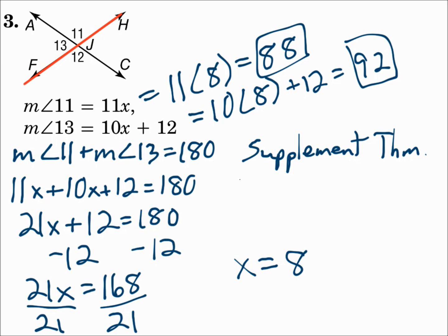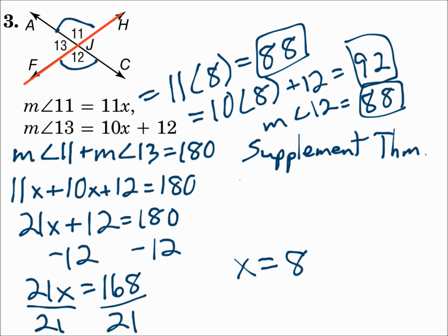For the measure of angle 12, which they don't give us a value for, look at the picture. Angle 11 and angle 12 are vertical angles, which are congruent. So the measure of angle 12 is the same as the measure of angle 11 — it's also 88 degrees. It all started from angle 11 and angle 13 being a linear pair, so their measures add up to 180 because of the supplement theorem. Then angle 11 and angle 12 are vertical angles, which are congruent.